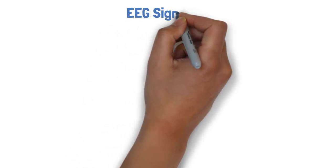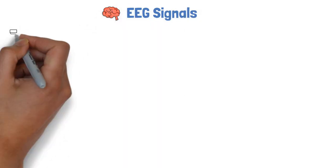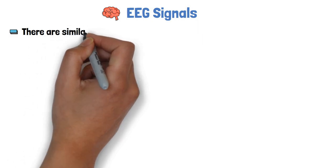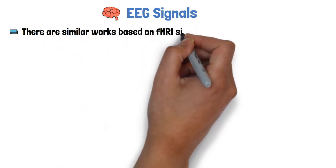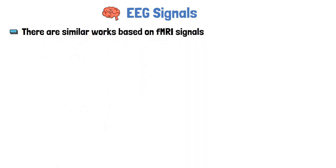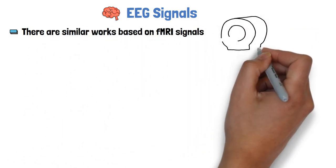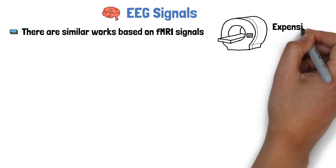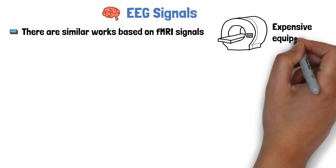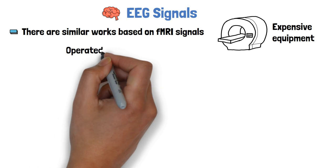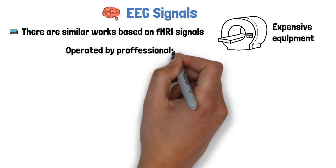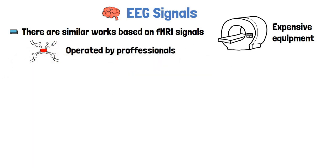Let's start with understanding the decision to use EEG signals. There have been similar works to generate images based on fMRI signals. The problem with that is that to obtain fMRI signals there is a need for expensive equipment, which is not easily accessible to anyone, and it also needs to be run by professionals who know what they do.